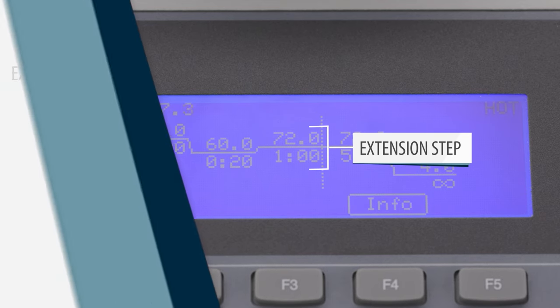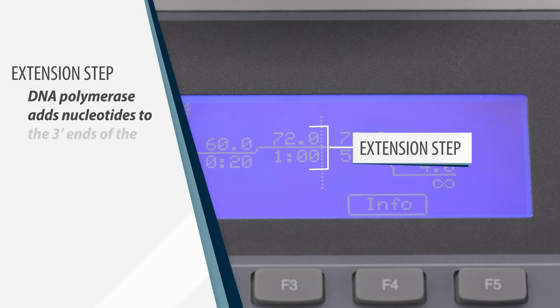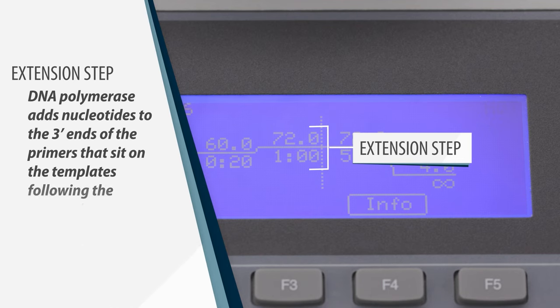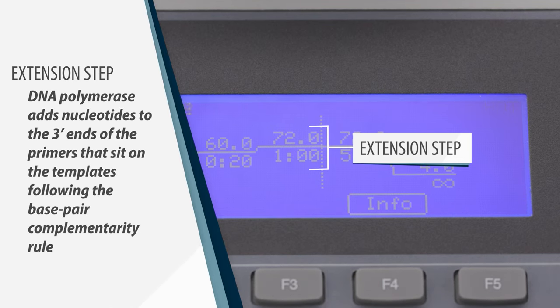In extension, DNA polymerase adds nucleotides to the three prime ends of the primers that sit on templates following the base pair complementarity rule.